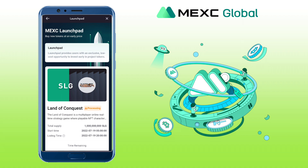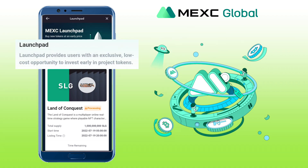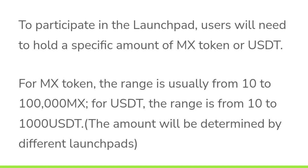With MEXC Launchpad, you can buy new tokens at an early price. Launchpad provides users with an exclusive low-cost opportunity to invest early in project tokens. To participate, users will need to hold a specific amount of MX tokens or USDT. For MX token, the range is usually from 10,000 to 100,000 MX. For USDT, the range is from 1,000 to 10,000 USDT. The amount will be determined by different Launchpads.